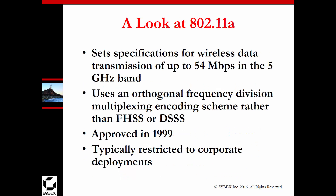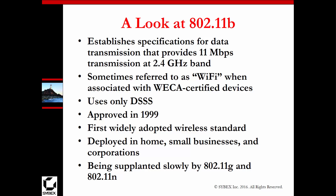802.11a was up to 54 megabits using the 5 GHz band, coming out in the late 90s. 802.11b also became standard around that same time, using 11 megabits but operating at the 2.4 GHz band.